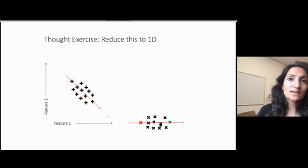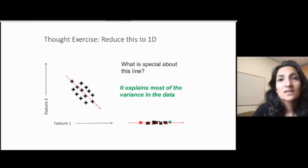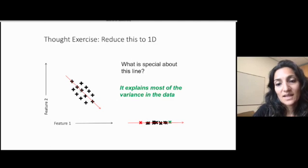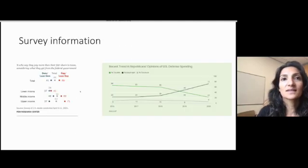Instead, if you project it onto this line, you would retain the distance between those two points. And you would get more of an idea of the spread of the data. So what's special about this line? This line actually explains most of the variance in the data. And this is a line we'll try to find using a method called principal components analysis.